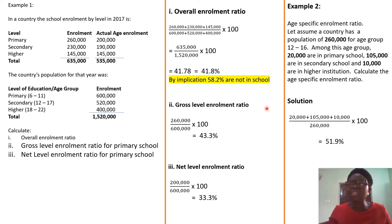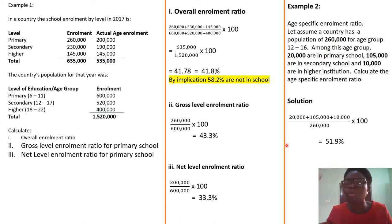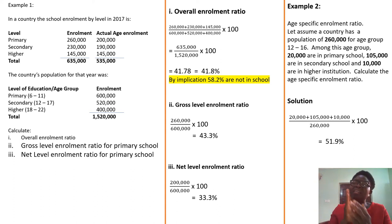To determine the age-specific enrollment ratio, you add all the enrollment irrespective of level — looking at the age enrolled across all levels: 20,000 in primary school, 105,000 in secondary school, 10,000 in higher institution — over 260,000, the total population of that age group. That gives you 51.9%, meaning 51.9% of the age group 12 to 16 are enrolled in school.